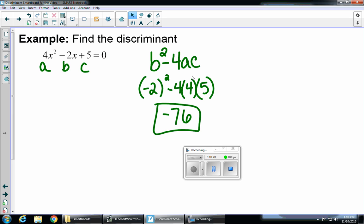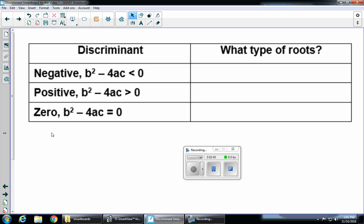that means my roots are going to be imaginary, because if you think back to where the discriminant is in the quadratic formula, it's under the radical. And we know whenever we get a negative under the radical, it's imaginary or complex. So when we have a negative, that means we're going to have two imaginary or complex roots or solutions.